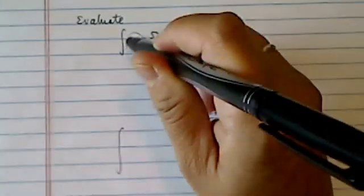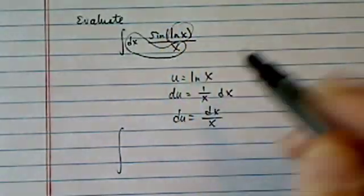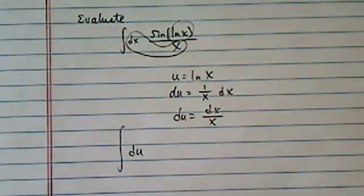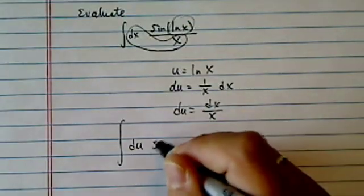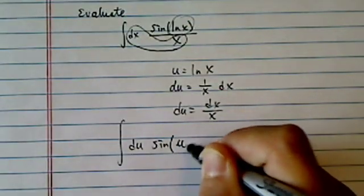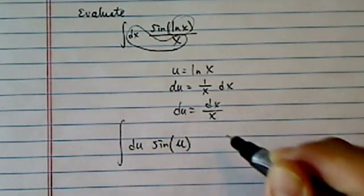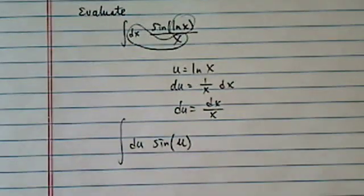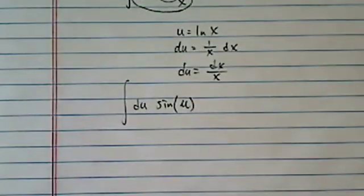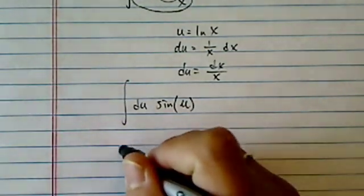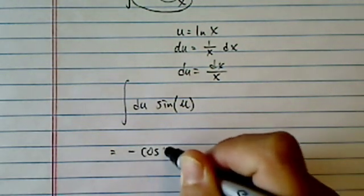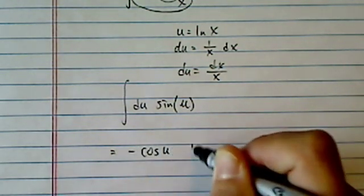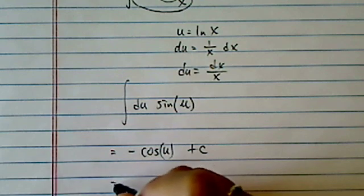Now x dx comes in and it becomes a du. Let's put u back in there. This integral is a pretty easy one to integrate, so we have minus cosine u plus a C.